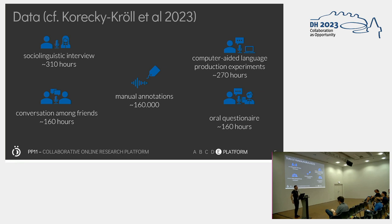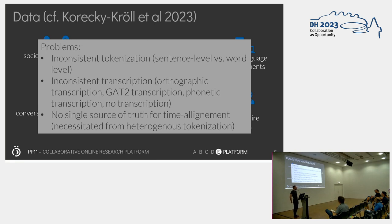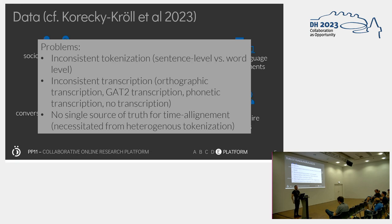This data is analyzed with manual annotations — there are roughly 160,000 of them. It would not be a large-scale research project without some problems with the data. The data is inconsistently tokenized: some is tokenized on a sentence level, some on a word level. There is inconsistent transcription — we utilize orthographic transcription, transcription according to the GATT standard, phonetic transcription where needed, and sometimes no transcription at all. Because it is a long-running project of eight years, the database has historically grown, so there is no single source of truth for the time alignment, partly due to the heterogeneous tokenization.